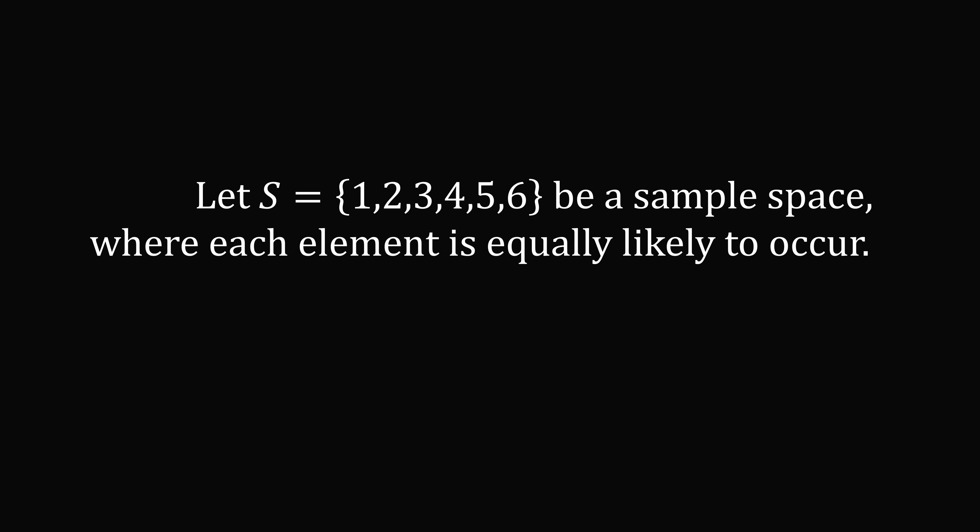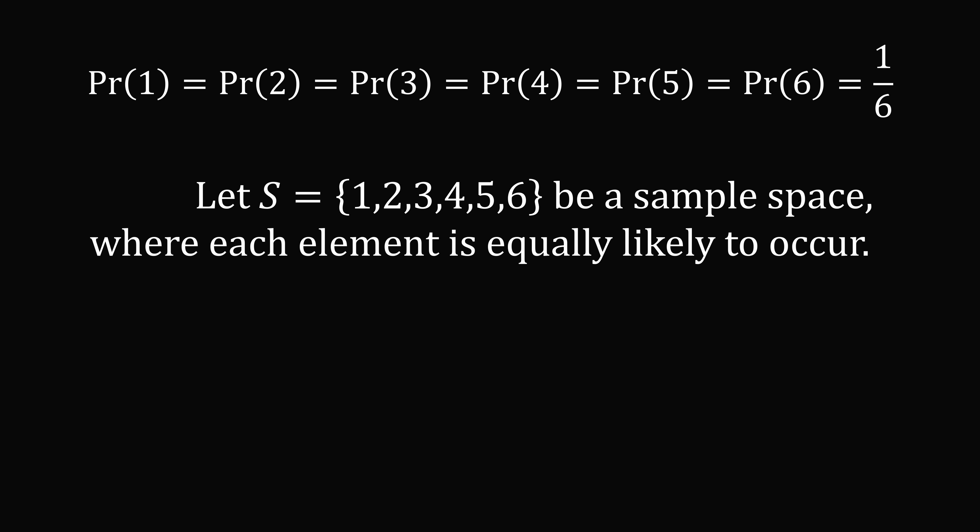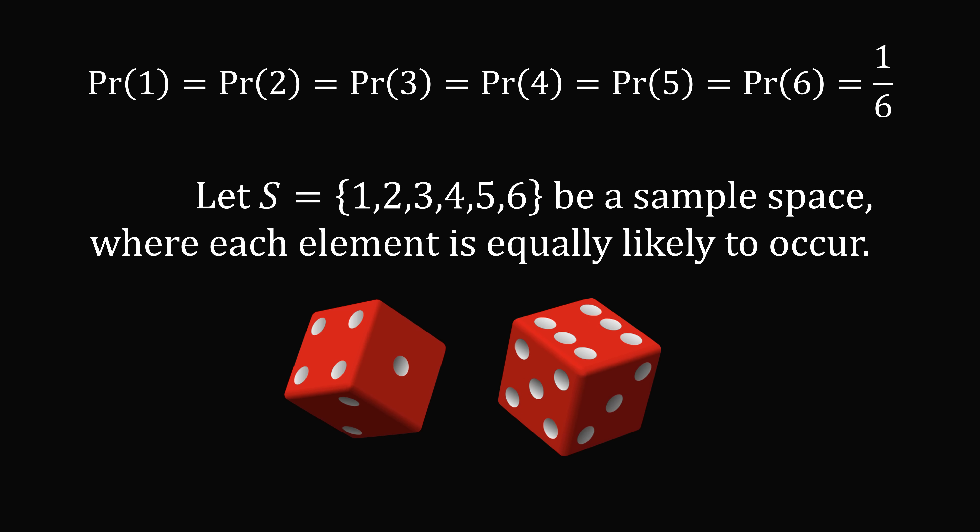Let's say B was {3, 6}, then the cardinality of B would be 2 because there are two elements in the set. Now the next sentence: let S be the set {1, 2, 3, 4, 5, 6} be a sample space where each element is equally likely to occur. So we have six elements in this sample space, each equally likely, so the probability of each will be equal to 1 over 6. Intuitively, this is the same sample space as the roll of a standard six-sided die, so you could think about this problem as finding subsets of a roll of a die.